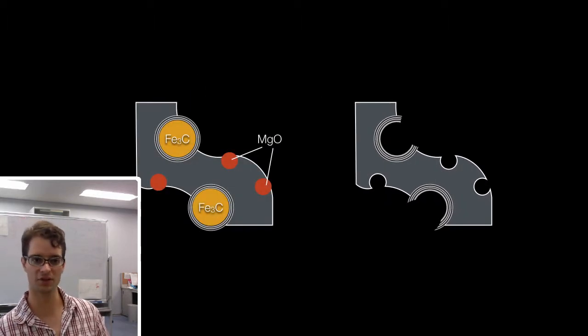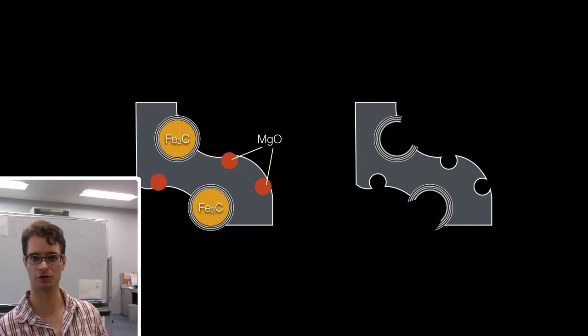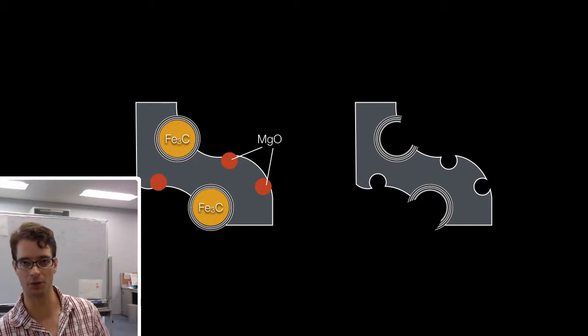So we wanted to use small-angle scattering to try and see whether the structure that we observe under the electron microscope is valid for the bulk amount of material, and whether perhaps it can tell us a little bit more.